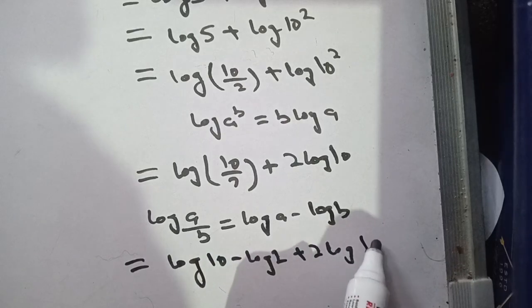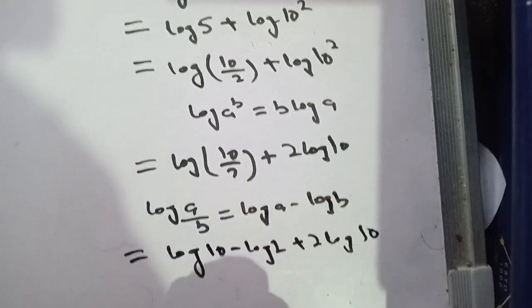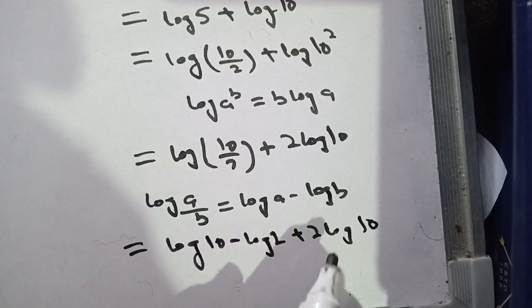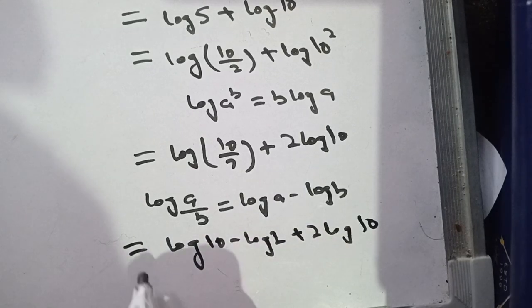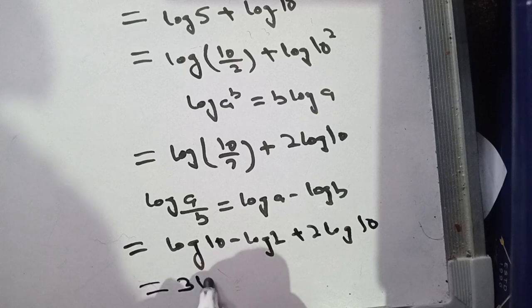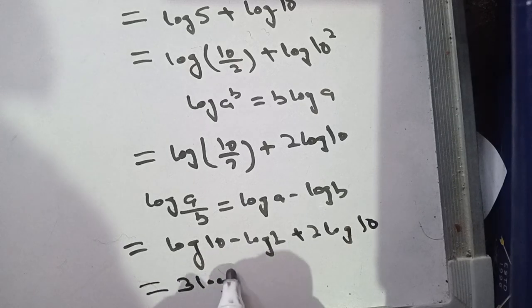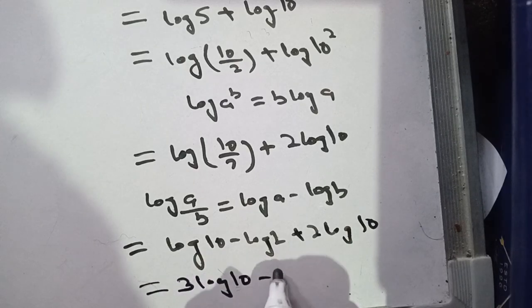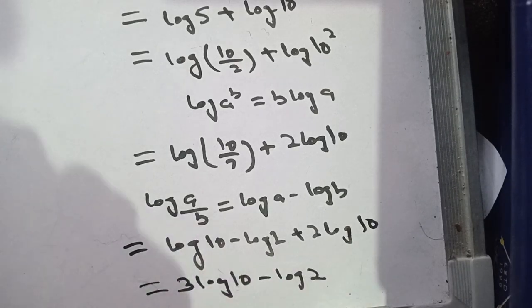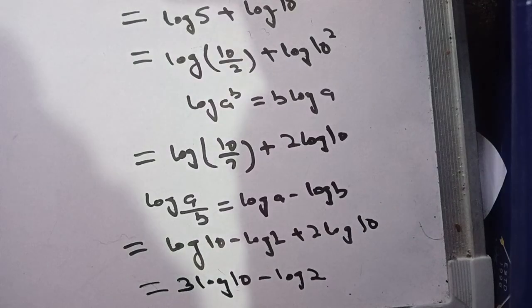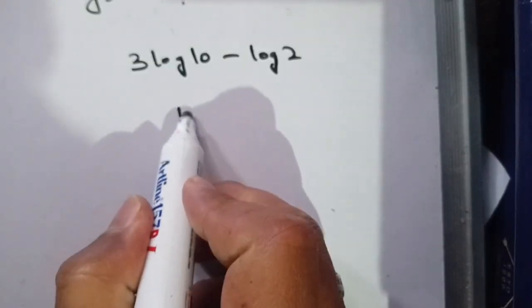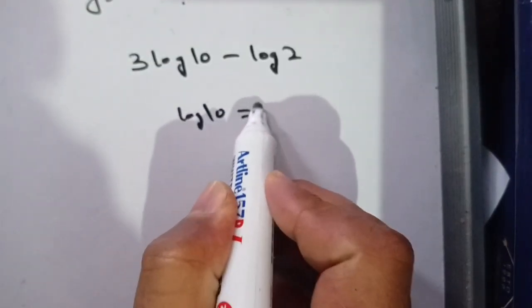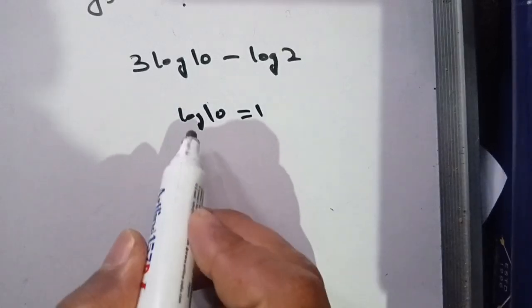Now combining terms, 2 log of 10 plus log of 10 becomes 3 log of 10 minus log of 2. We know that log of 10 is equal to 1.